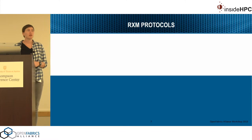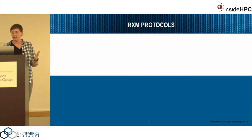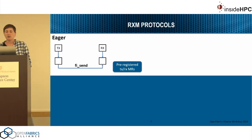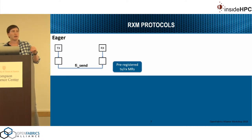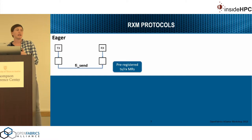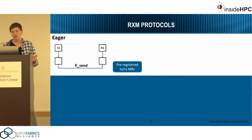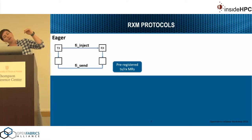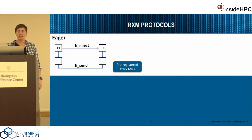That's the connection management protocols. In terms of messaging protocols, we have three main protocols to handle various different message sizes. The first is a very simple eager message. The main consideration is MR registration — we use preregistered MRs for the transmit and receive side buffers. We copy our data into a preregistered MR, send it using the core provider's fi_send function, and receive it and copy it into the receive buffer. We do have a quick path with fi_inject since it doesn't actually need the preregistered buffers.